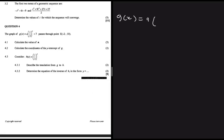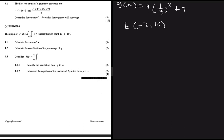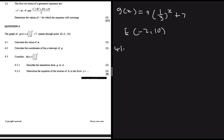Now for question 4: g(x) = a·(1/3)^x + 7, and we're told it passes through point E(-2, 10). Question 4.1 asks us to calculate the value of a, which we can find using the given coordinate.